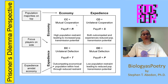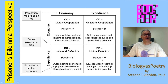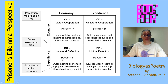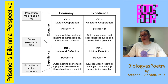When we have a mutually cooperative interaction, that means it's an economical replicator parasite found within a population of economical parasites. Where we have mutual defection, it's an expedient parasite that finds itself within a population of expedient parasites. When we have unilateral defection with the payoff of T, we have an expedient parasite found within a population of economical parasites. And when we have the payoff value of S, the sucker's payoff — unilateral cooperation — we have an economical parasite that finds itself within a population of expedient parasites.